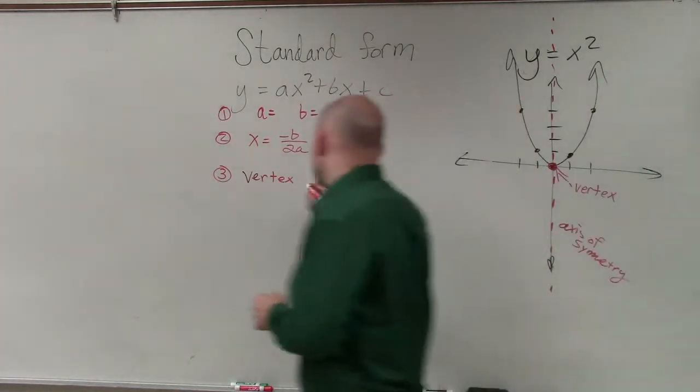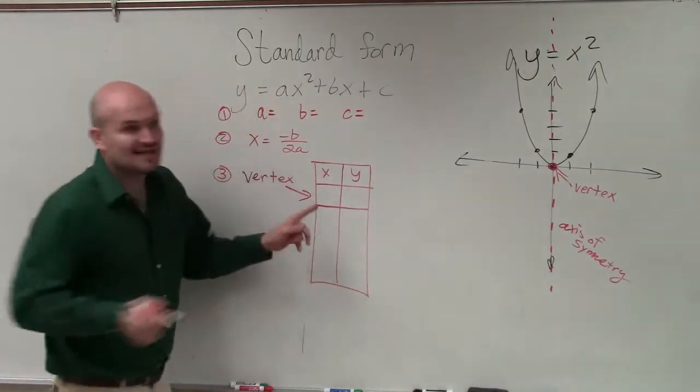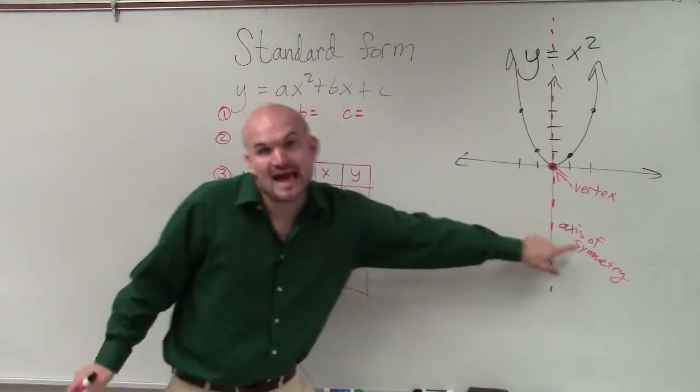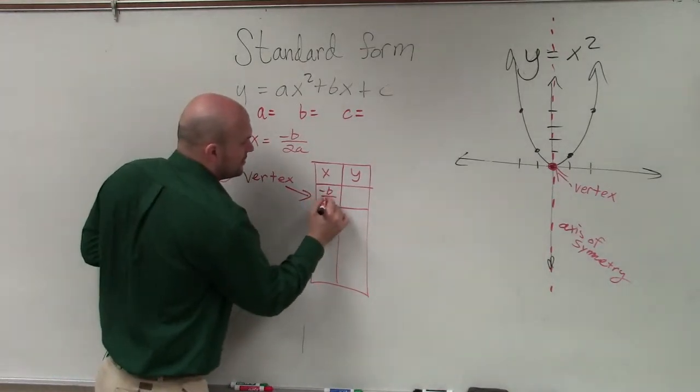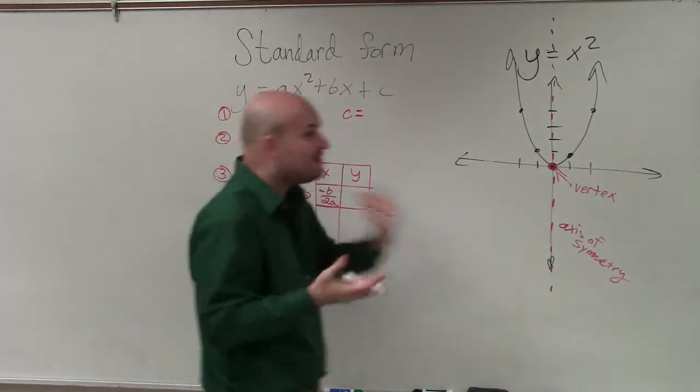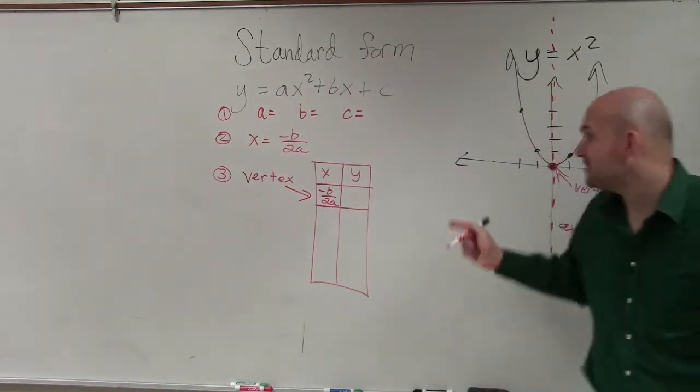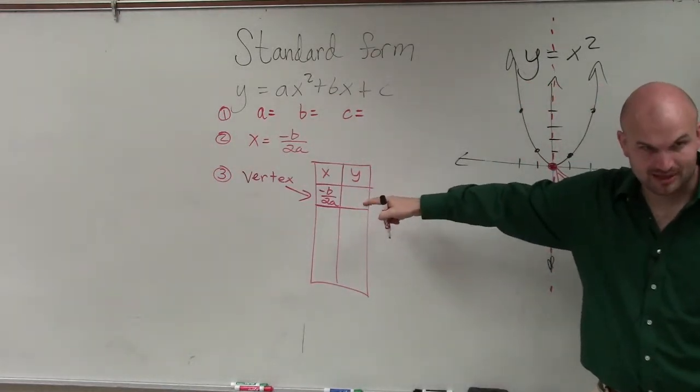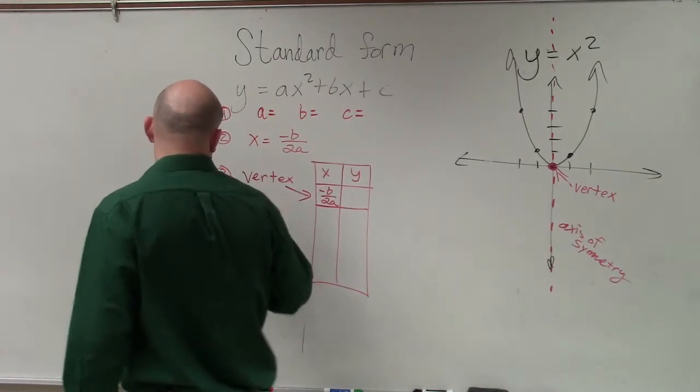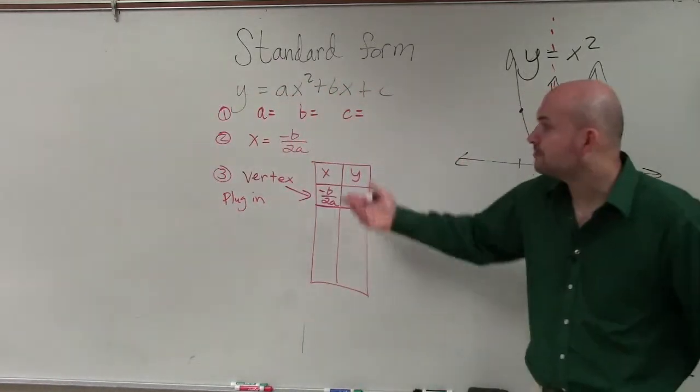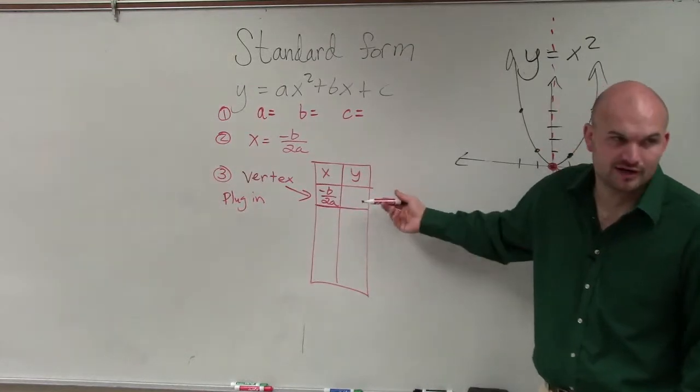So in this case, to find the vertex, we know the x value. The x value is the axis of symmetry, which is negative b divided by 2a. So we figure out whatever that value is, and then we figure out what the y-coordinate is going to be. So you have to plug that in. So we're going to plug in the x, and then we're going to figure out the y.